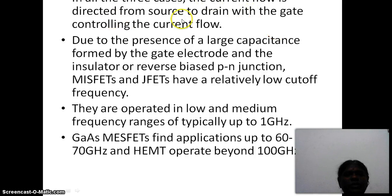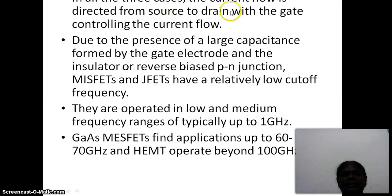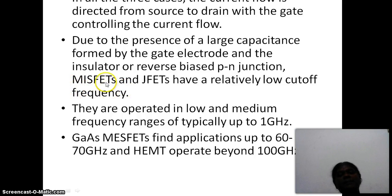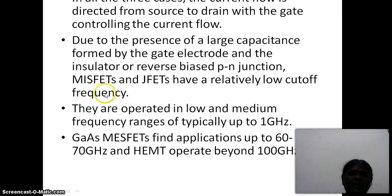In all three cases, the current flow is directed from the source to drain with the gate controlling the current flow. Due to the presence of a large capacitance formed with the gate electrode and the insulator or reverse biased PN junctions, MESFETs and JFETs have relatively low cutoff frequency. So they cannot be used for very high frequency applications. MESFETs and JFETs can be used for ranges up to 1 GHz.